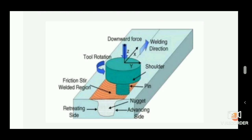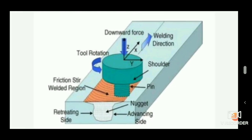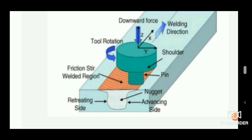The tool consists of a shoulder and a pin. The pin has a thread that is anti-clockwise, while the tool rotates in the clockwise direction to join the metal. First, the two metals to be joined are clamped together, then the tool is rotated.